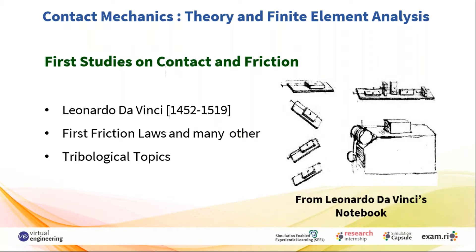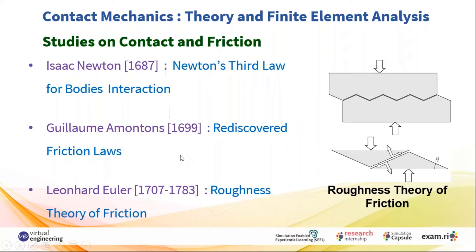In the 14th century, da Vinci was one of the first persons to observe that due to contact, information and data could be recorded — essentially what we call a notebook. Then in the 16th century, Newton studied the interaction between bodies, and Euler was a key person who studied friction between rough surfaces, developing the theory of friction that we still use today.